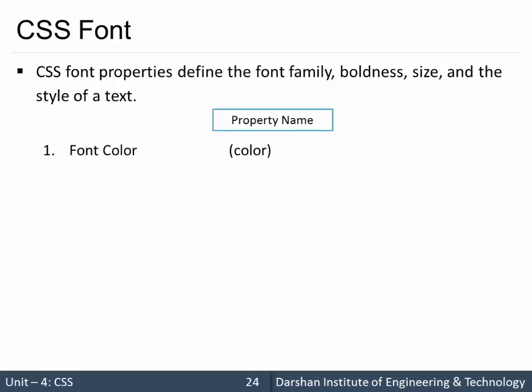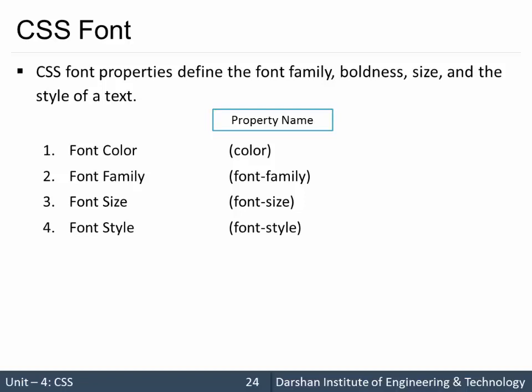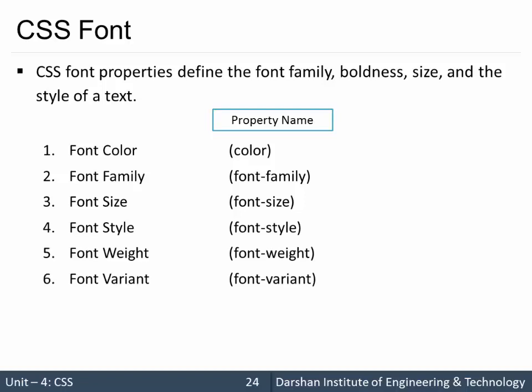First is font color — whenever you want to specify a color to some fonts you can use this property. CSS font properties include: font-family, font-size to specify the size of the font, font-style which specifies style to the font, font-weight, and font-variant. We will see everyone in detail.